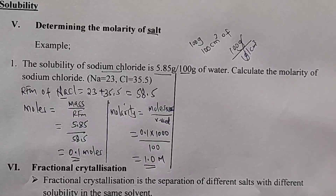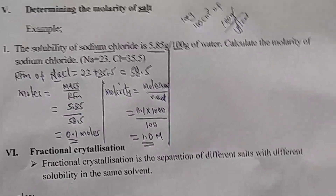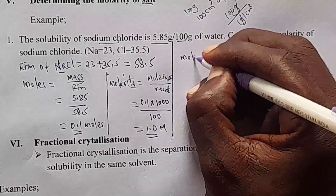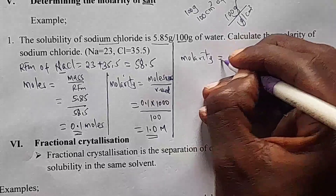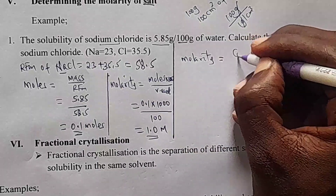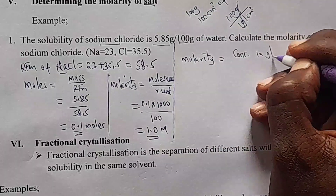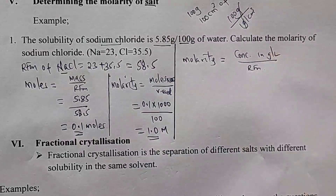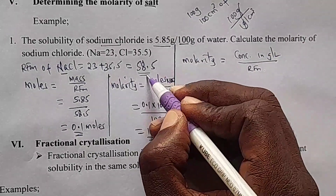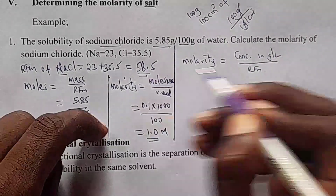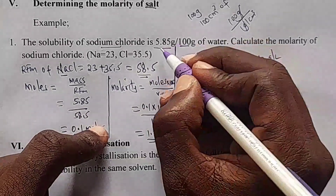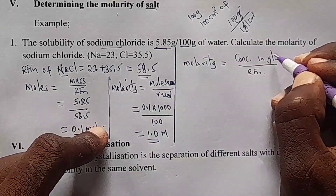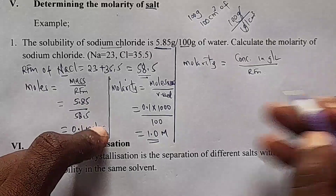There's another way to get molarity. Molarity can be given by concentration in grams per liter over the RFM. We already have the RFM, so we need to find concentration in grams per liter, which is also known as mass in grams per liter.